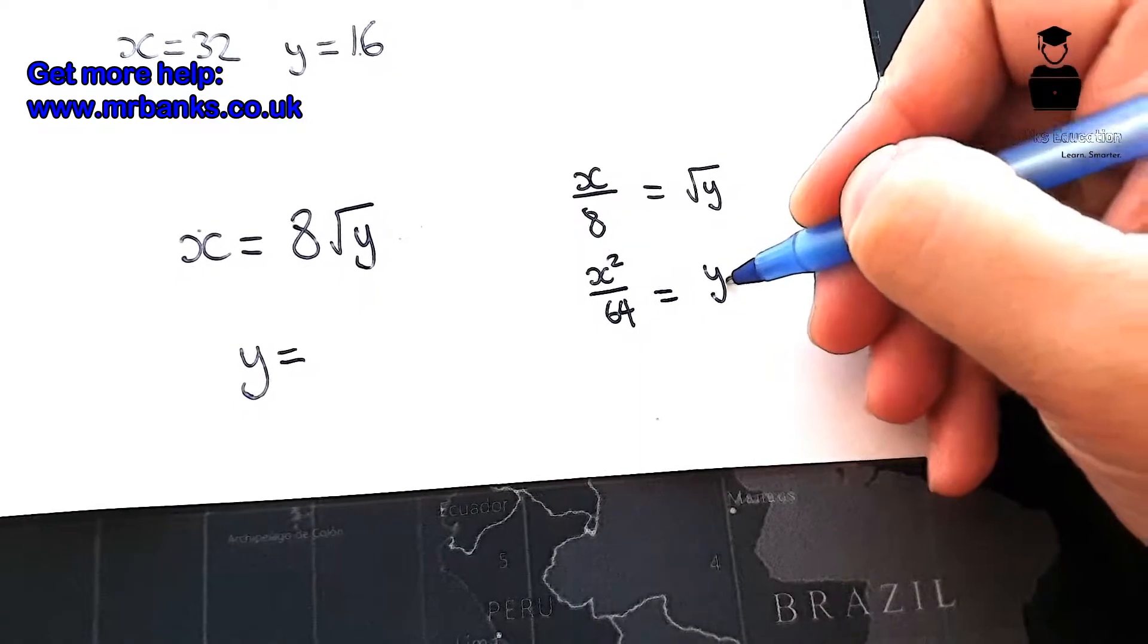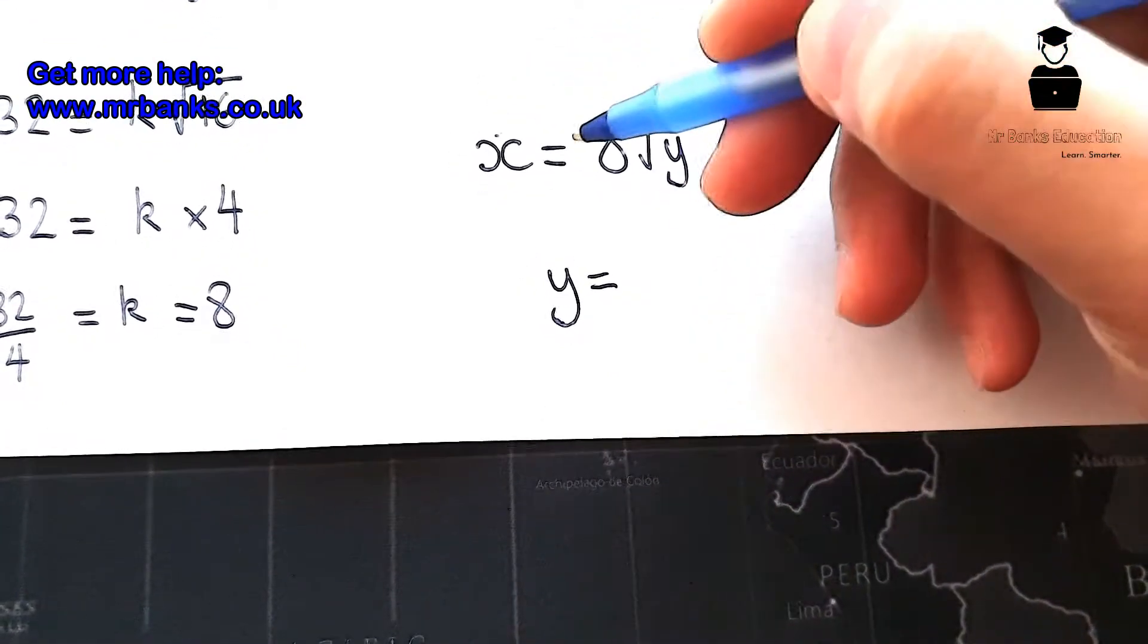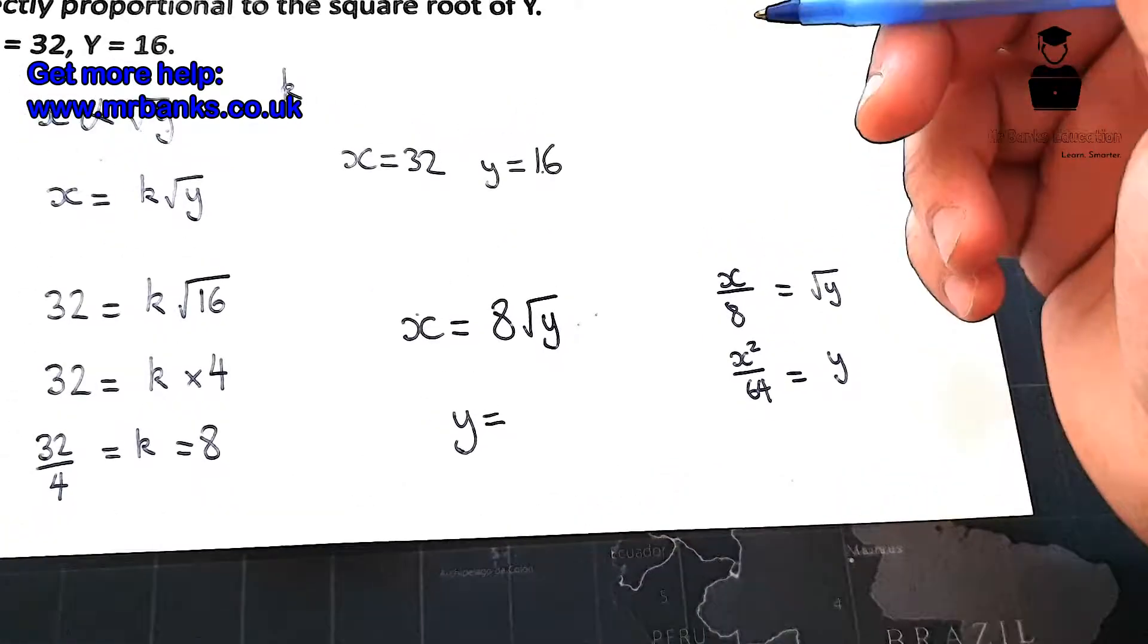So if the question had asked find Y in terms of X, then Y would have to be what everything is equal to. But the question asked for X in terms of Y, so that was actually all we needed to do.